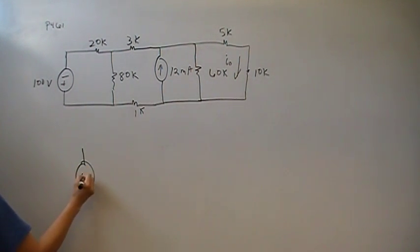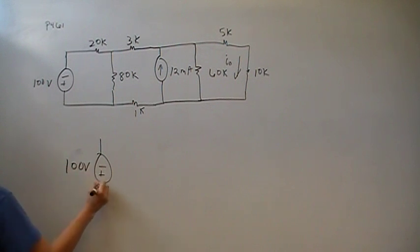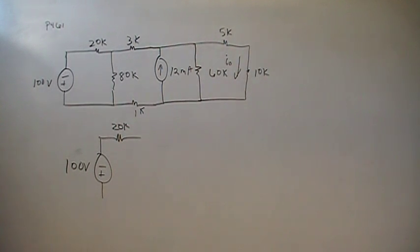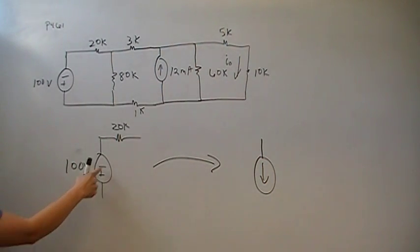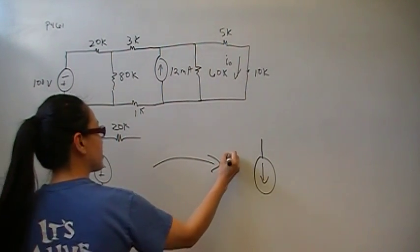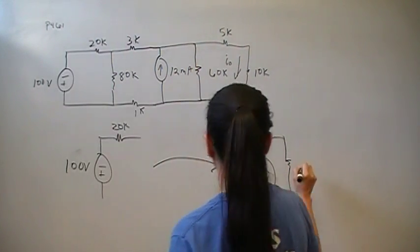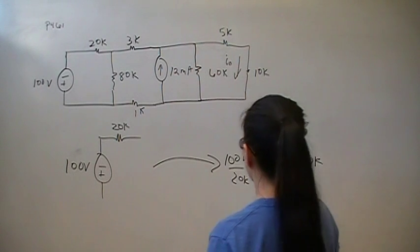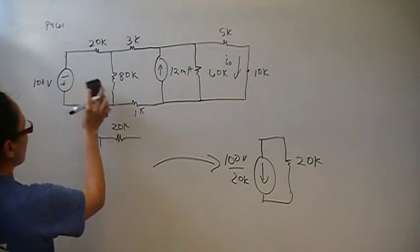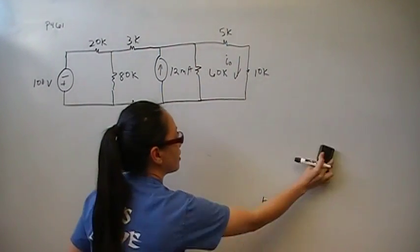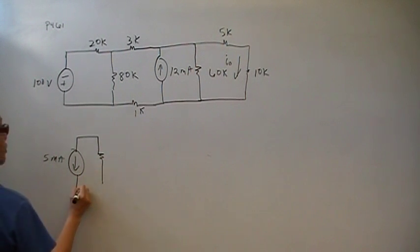The first thing we have is the 100-volt source in series with 20K. Notice the voltage goes from minus to plus, so the direction of the voltage rise is down. Source transformation tells us that is going to be the same as 100 volts over 20K in parallel with 20K, which gives us 5 milliamps. So we redraw that as 5 milliamps in parallel with 20K.